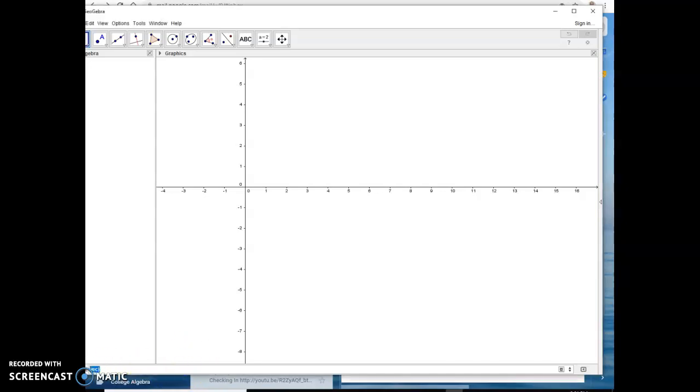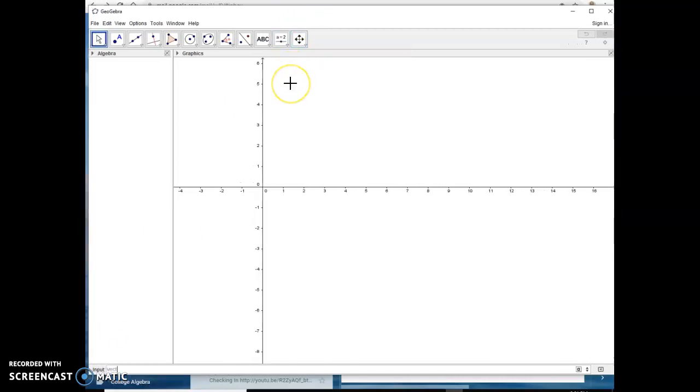To create a vector you come down here to your input bar and you type in the word vector and it'll start to populate. It will show you a couple of different options. The very first one just requires that you give it an ordered pair. So if I wanted to plot the vector 1, 2, I would use...